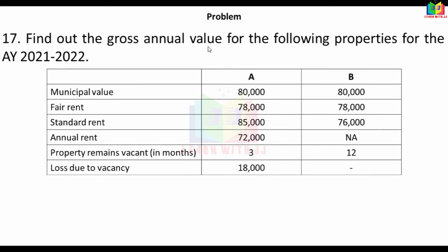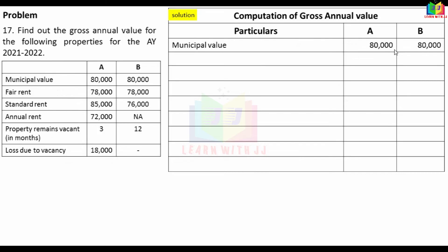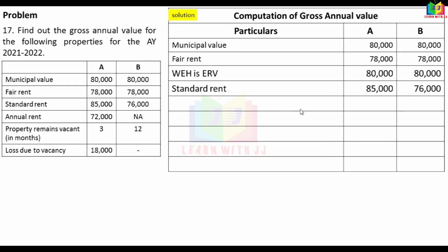Next problem: find out the gross annual value for the following properties for AY 2021-22. Given: municipal valuation, fair rent, standard rent, annual rent, vacancy details. The process: compare municipal value and fair rent — the higher is the Expected Rental Value (ERV). Then compare ERV with standard rent — take the lower. Municipal value is 80,000, fair rent comparison gives ERV of 80,000. Standard rent is less than 80,000, so ERV becomes 76,000.